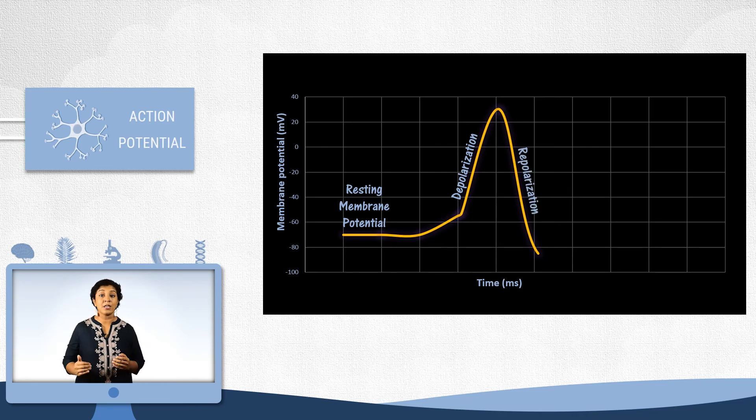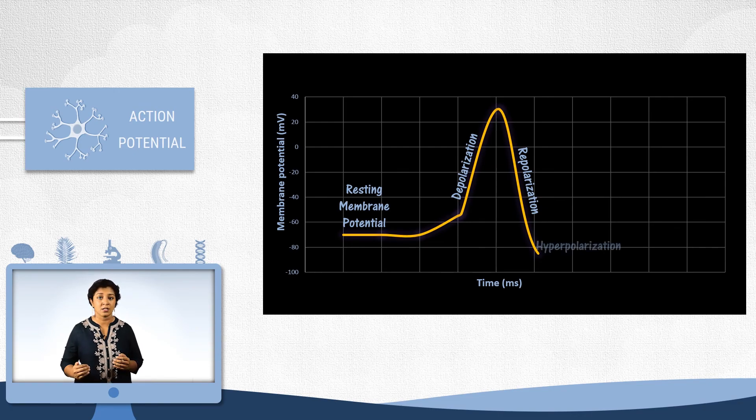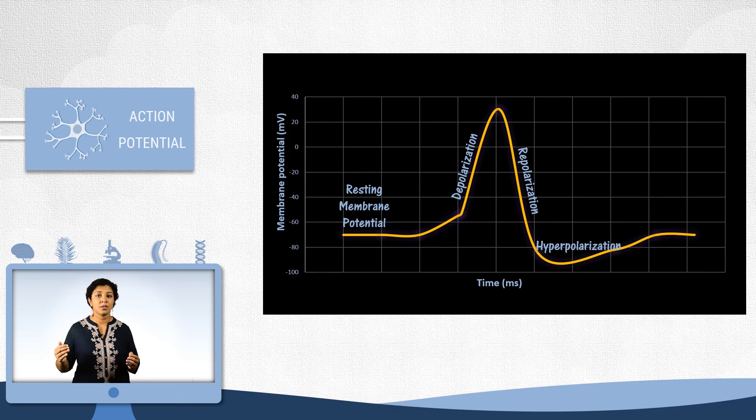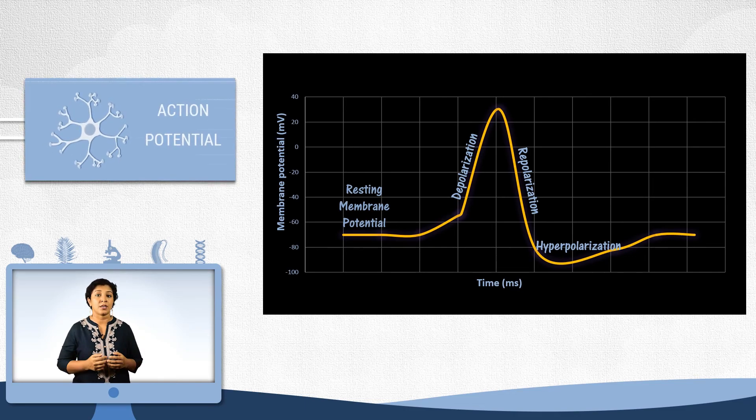At minus 90mV, voltage is way below the normal resting state. This is known as the hyperpolarization stage. Then it will slowly return to normal again. Now this characteristic curve that forms due to the rapid increase and decrease of voltage is what is called as action potential.